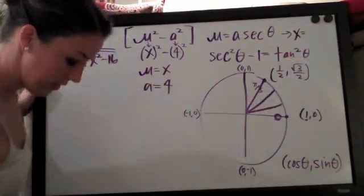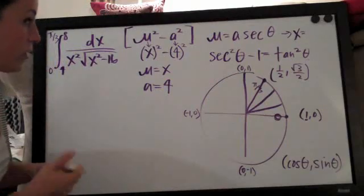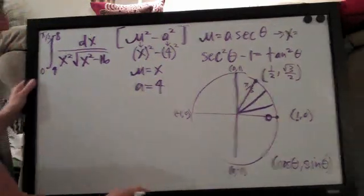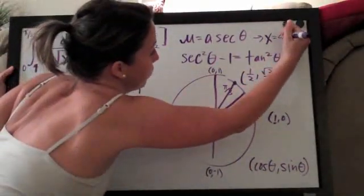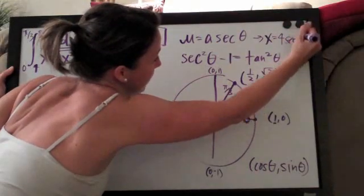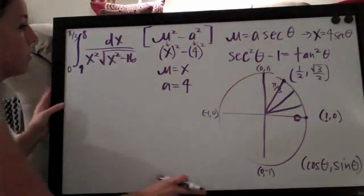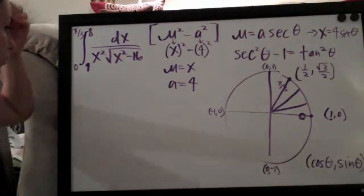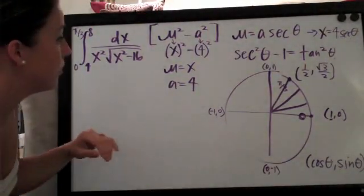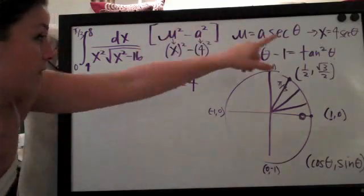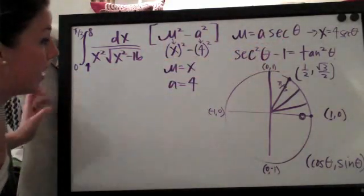And we're going to need that range later as well. So it's a good thing that we've done it up front and we used it to check to make sure that this is in fact just four secant theta and not negative four secant theta. So great, now we can move on. We've got our x, we've got our range. So the next thing we do is now that we have our x, we need to find dx.